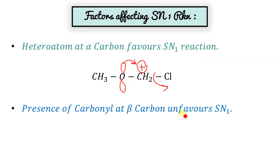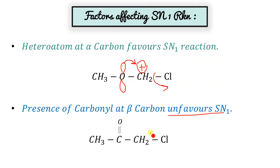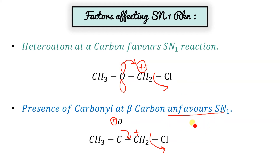Presence of a carbonyl group at the beta carbon unfavors SN1. If the leaving group goes out forming a carbocation, the double bond shifts over, causing oxygen to bear a positive charge. Oxygen cannot bear the positive charge on itself — that's why it unfavors SN1.